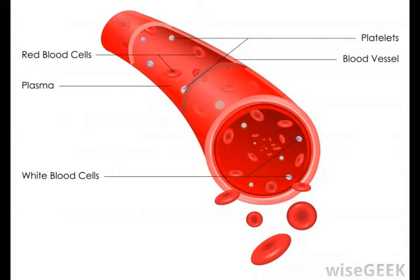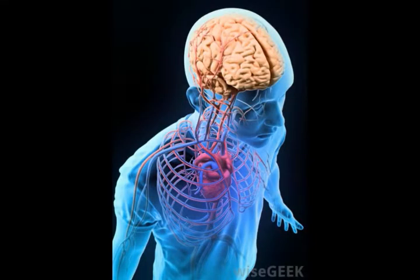An intricate system of arteries supplies the brain with the oxygen it needs to function. The internal carotids and the vertebral arteries are the main vessels that supply blood to the brain. These arteries form a circle known as Willis circle, named after Thomas Willis, the British physician who discovered it. Willis circle is located at the base of the brain, and this arterial system is designed so that if there is a blockage in one artery, blood flow can be diverted to other arteries.